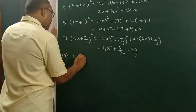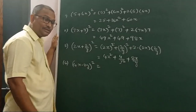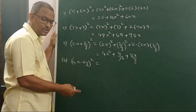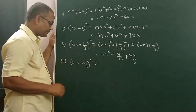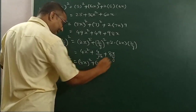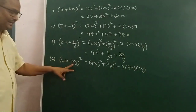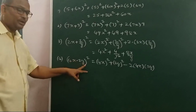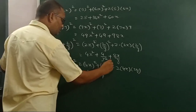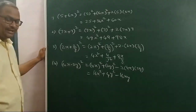Next: 4X minus 2Y whole square. This is in the form of A minus B whole square — we can also write it as 4X plus minus 2Y whole square. Using A minus B whole square equals A square plus B square minus 2AB: A means 4X, B means 2Y. That equals 4X whole square plus 2Y whole square minus 2 into 4X into 2Y, which gives 16X square plus 4Y square minus 16XY. This is the expansion of 4X minus 2Y whole square.